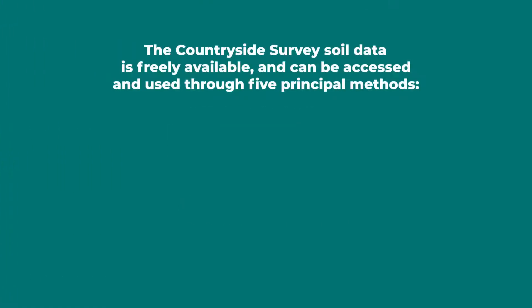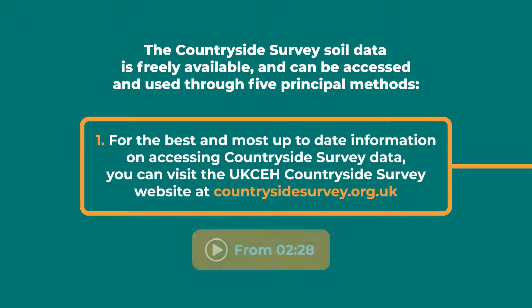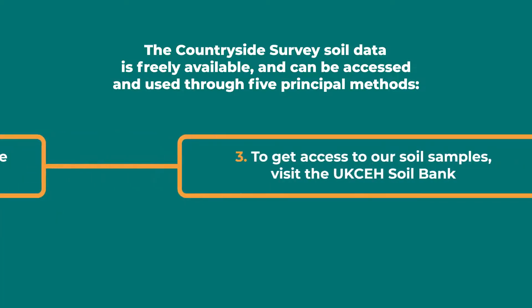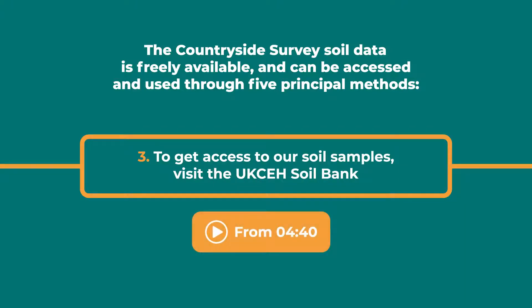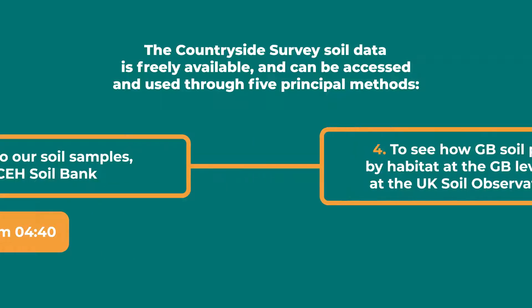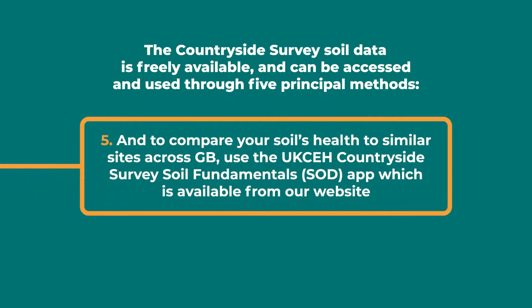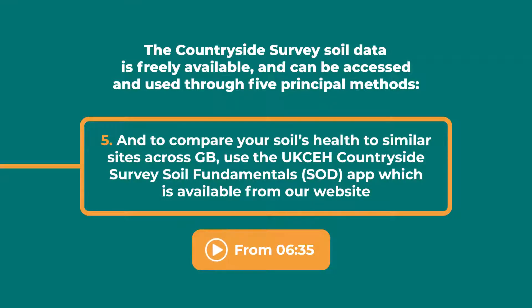The Countryside Survey soil data is freely available and can be accessed through five principal methods. One, for the best and most up-to-date information on accessing Countryside Survey data, you can visit the UKCEH Countryside Survey website at countrysidesurvey.org.uk. Two, download the full dataset from the EIDC. Three, access our soil sample archive by visiting the UKCEH Soil Bank website. Four, visualize our data for GB at the UK Soil Observatory. Five, compare your soil's health to similar sites across GB using the UKCEH Countryside Survey Soil Fundamentals SOD app, which is available from the Countryside Survey website.